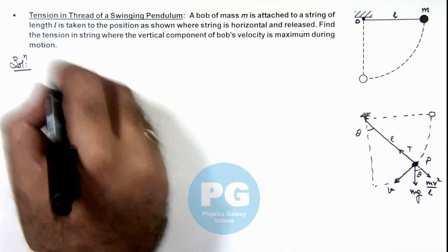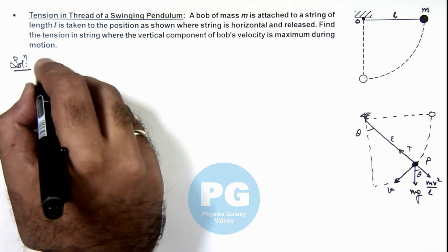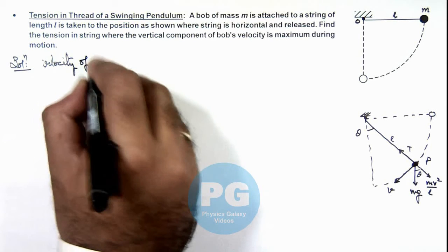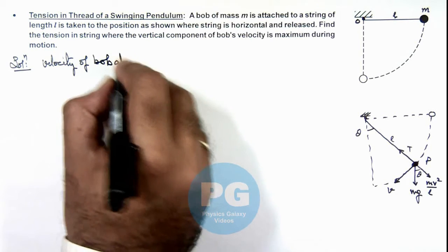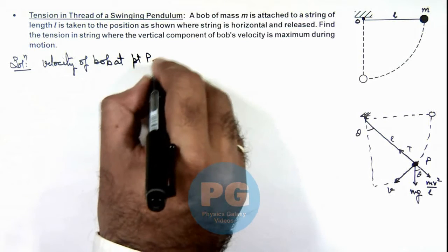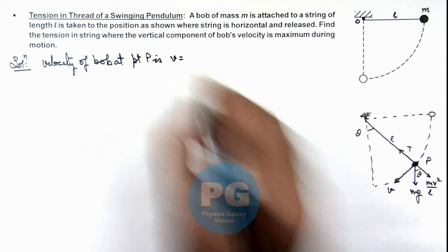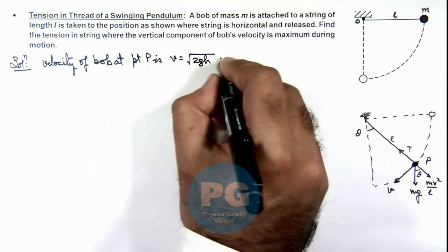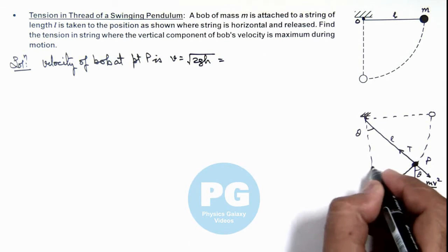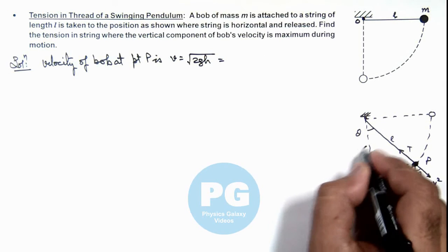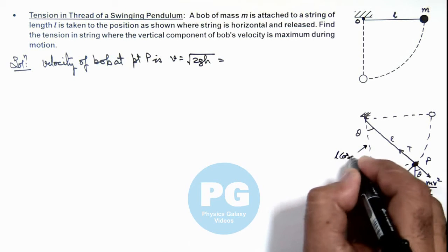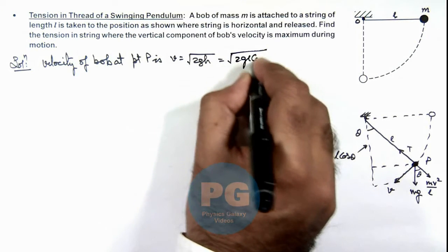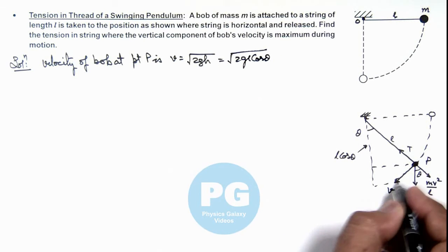If this point is P, we can directly write the velocity of bob at point P. This speed, as it is falling under gravity, can be written as √(2gh), and here the height to which it has fallen is l cos θ. So this will be √(2gl cos θ), that is the velocity of bob at point P.